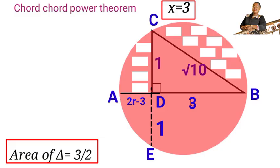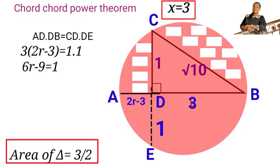According to the chord-chord power theorem, AD times DB will be equal to CD times DE. So let us substitute. We have 3 bracket 2R minus 3 equals to 1 times 1. So let us open up that bracket. We have 6R minus 9 equals to 1.